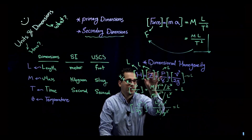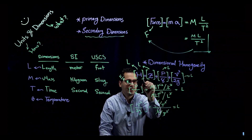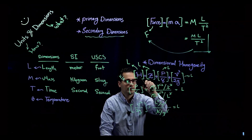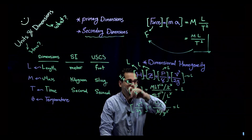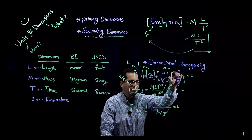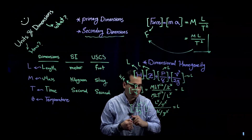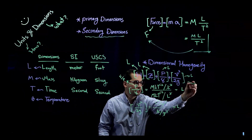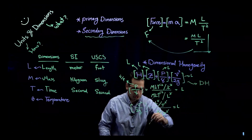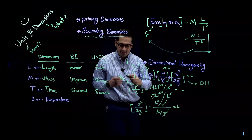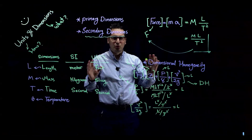So now I can confirm that this equation is dimensionally homogeneous. Every single term has the dimension L: H has dimension L, z has dimension L, pressure head has dimension L, and velocity head has dimension L. This is my introduction to units and dimensions.